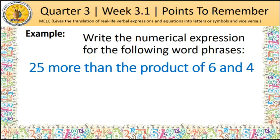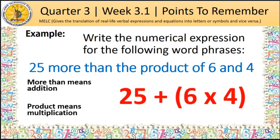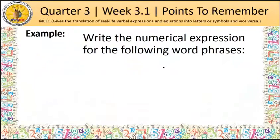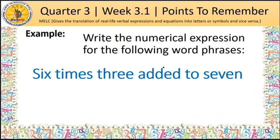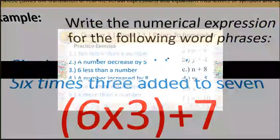25 more than the product of 6 and 4. More than means addition, and product means multiplication. There are two mathematical operations, so we need to put parentheses to separate numbers or group for clarity. 6 times 3, added to 7.